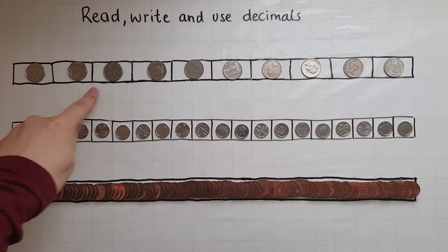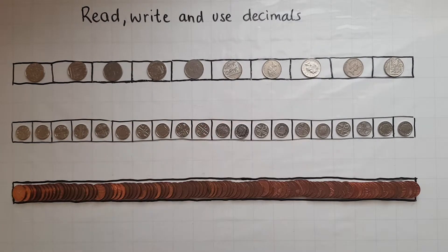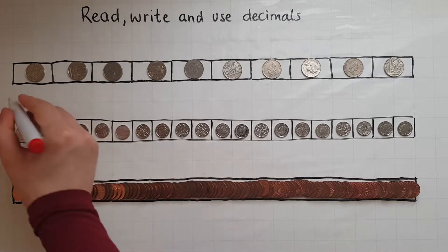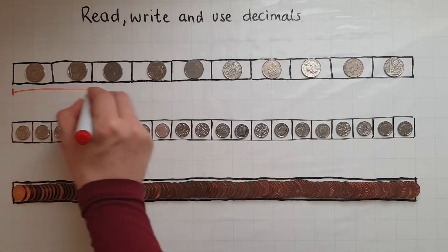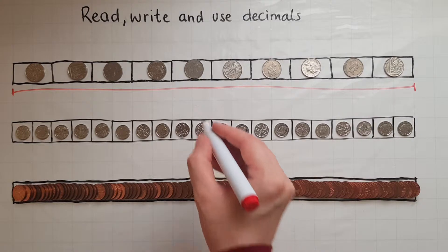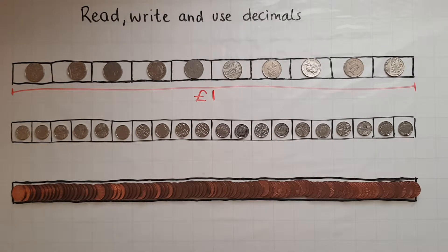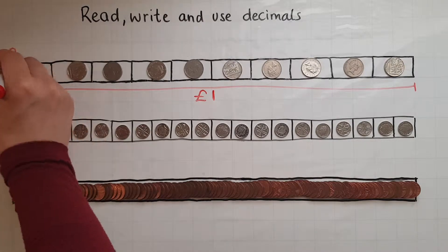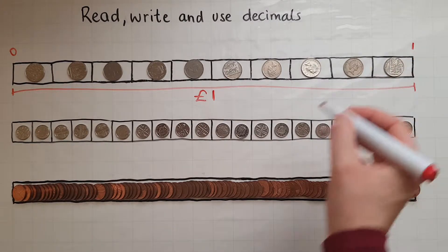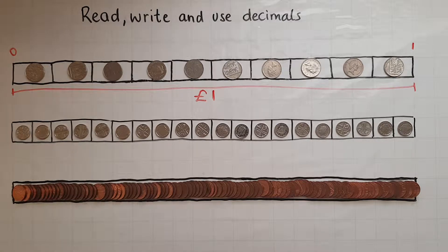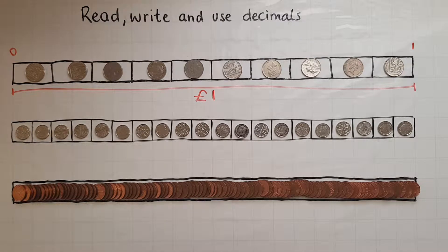I've got a number of 10p coins in a row. There are 10 of them, which means that from this point to this point all this is worth one pound. So we started with zero and we end with one, a whole pound. And this is how decimals usually work — out of one. They go over one as well, but we compare them to that one whole.